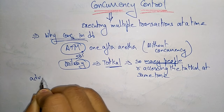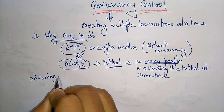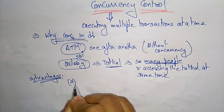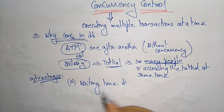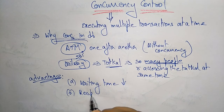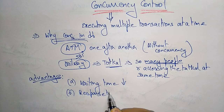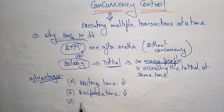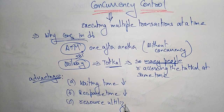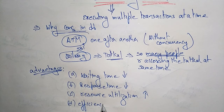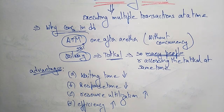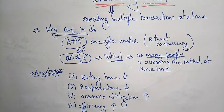What are the advantages of using concurrency in databases? First, the waiting time will decrease. Second, response time will decrease. Third, resource utilization increases — so many people can utilize the same resource. Fourth, system performance and efficiency will increase. These are the advantages of using concurrency.